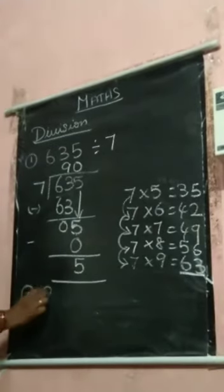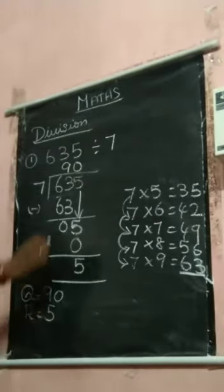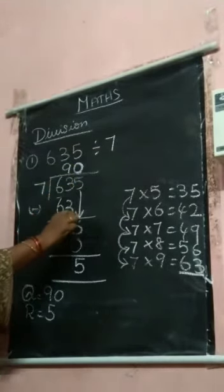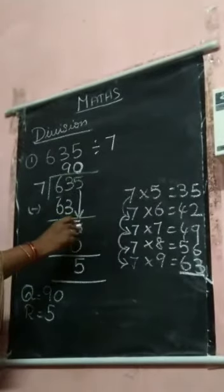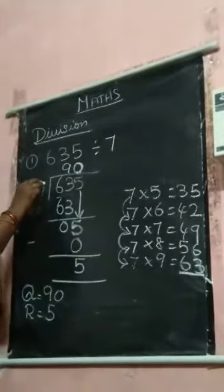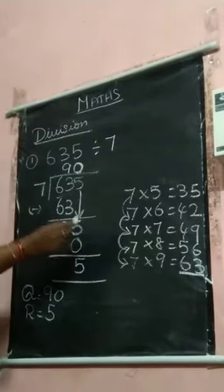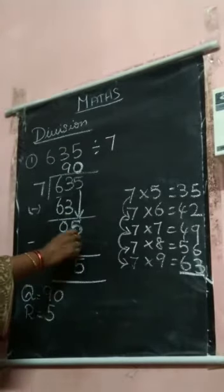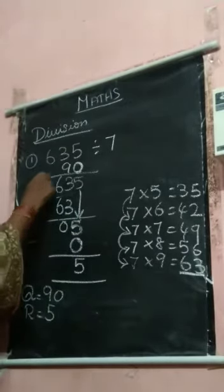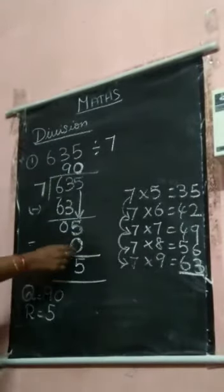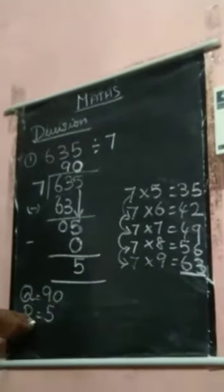Quotient is 90. Why are we putting 0 here? Because you bring down this number, but there is no number — only 5 is there, and 5 is smaller than 7. For that, you put 0, 7 0's are 0, after that you subtract, and you get 5 as a remainder.